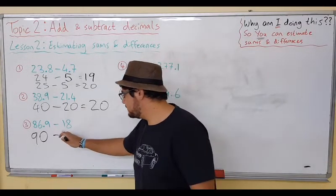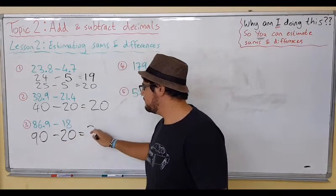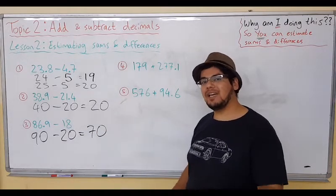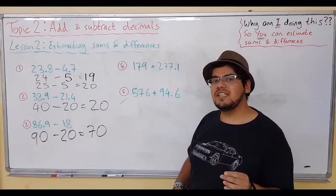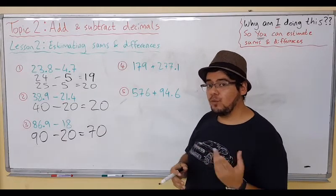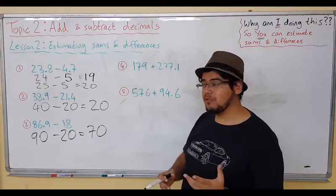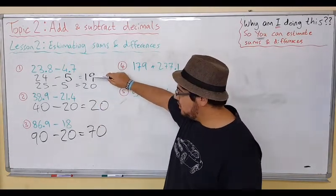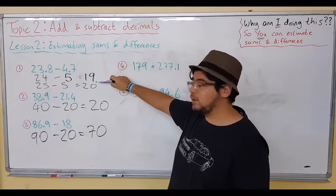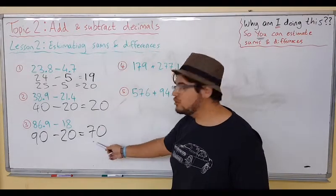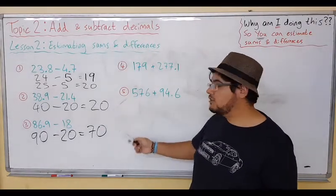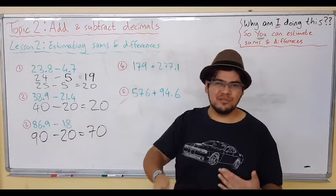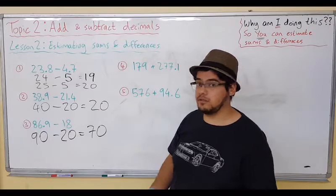Change it to 20. Do you see the whole idea of estimation is to make it quick and easy for you, just to see where your answer should be, where your answer needs to be around? So for all of these, we can see the answer to this should be somewhere around 19 and 20, should be around 20, should be around 70. Does it matter if it's one or two added or one or two subtracted? No, it doesn't.